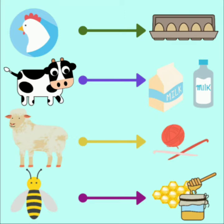Children, have you seen how many different things we get from animals? Animals are our friends. Therefore, we should be nice to them. We should not hurt or irritate animals. Do you know that during Diwali, so many animals were hurt due to the firecrackers? So children, we should treat animals with kindness.